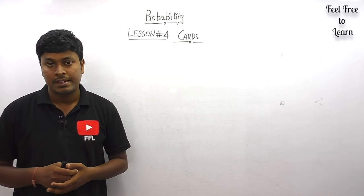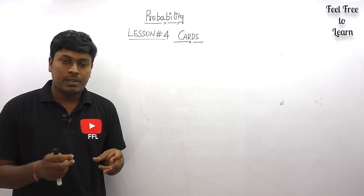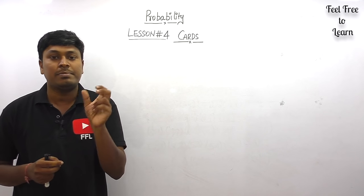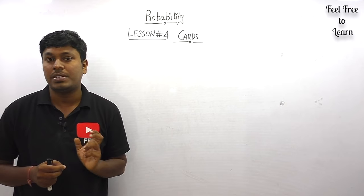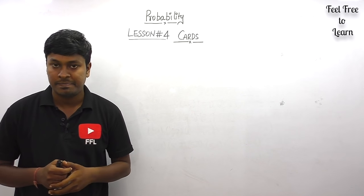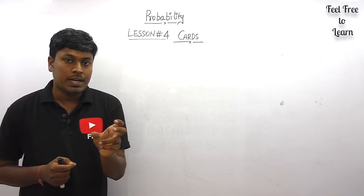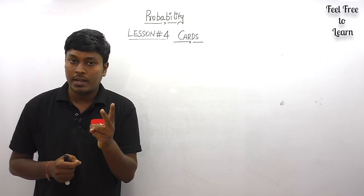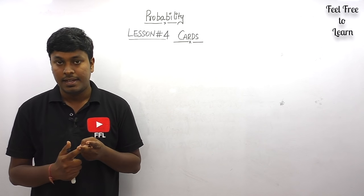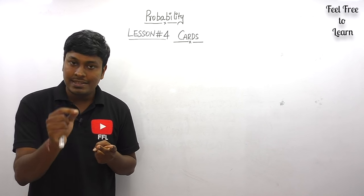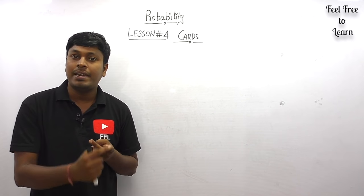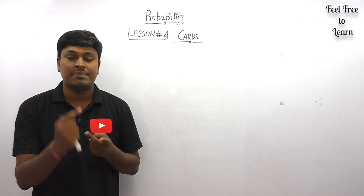First of all, a pack has 52 cards — a pack of cards will have 52 cards totally. Out of these 52 cards, we have two colors: one is red color and another is black color. So 26 cards are red color and the remaining 26 cards are black color.